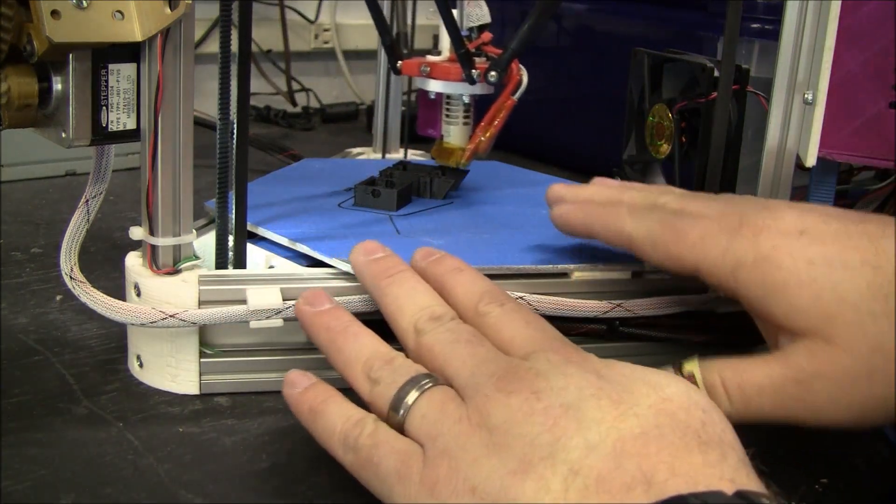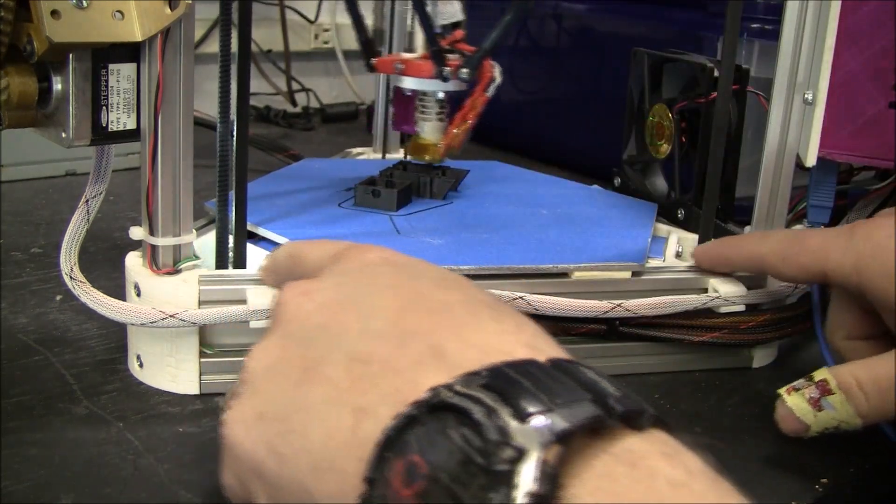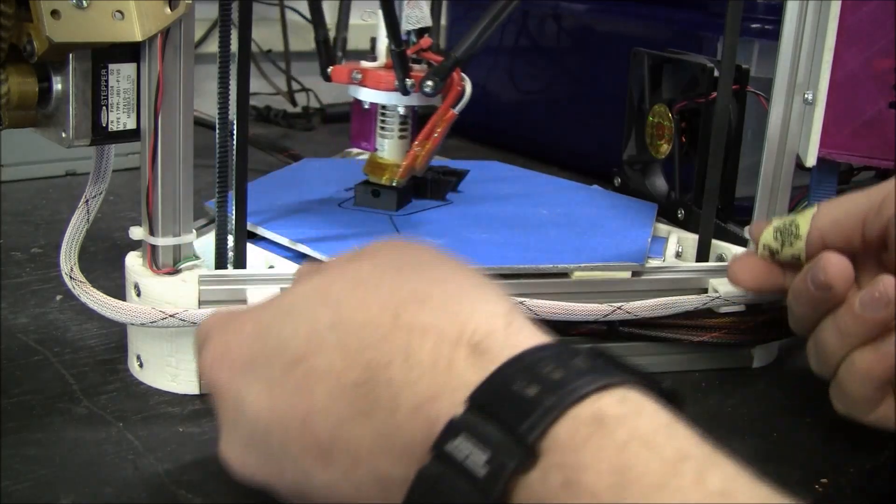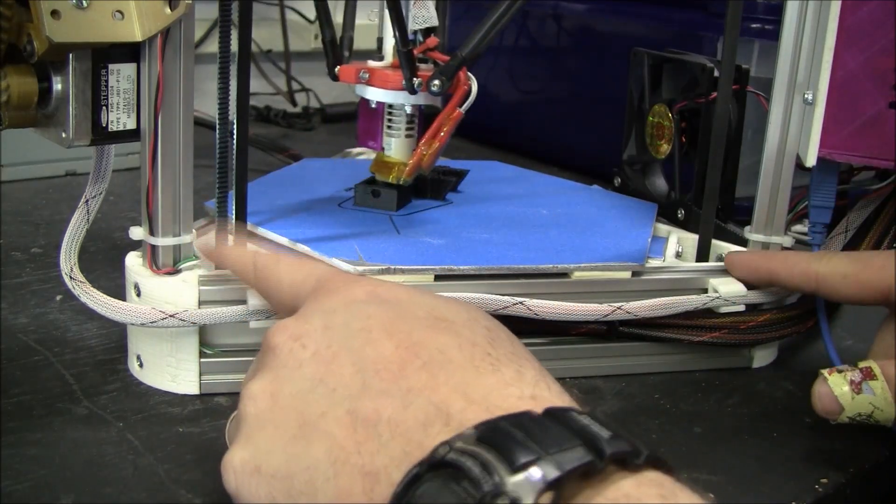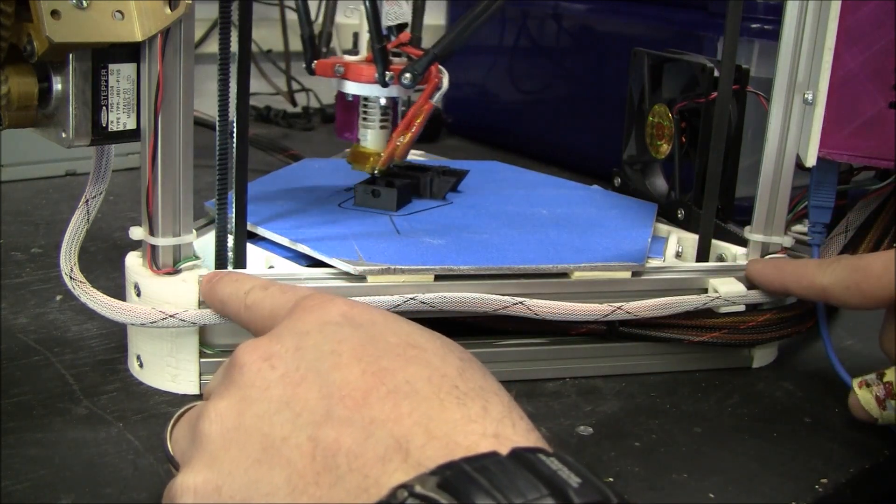Now when you put this on, if the bed is a little bit unlevel, what you can do is loosen up the screws on these and adjust it a little bit and then tighten them back down, because there's a little bit of wiggle in these guys.